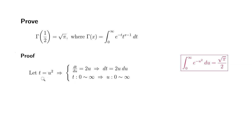Because if t is 0, u is going to be 0. If t is infinity, u is going to be infinity. So let's work on gamma of 1 half.